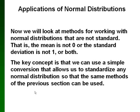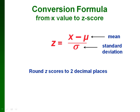Now we want to look at normal distributions that aren't standard. In other words, either the mean isn't 0 or the standard deviation isn't 1. So here's how we convert from another normal distribution back to a standard distribution. This is the same formula that we had previously for z-scores. And we're always going to round z-scores to two decimal places.